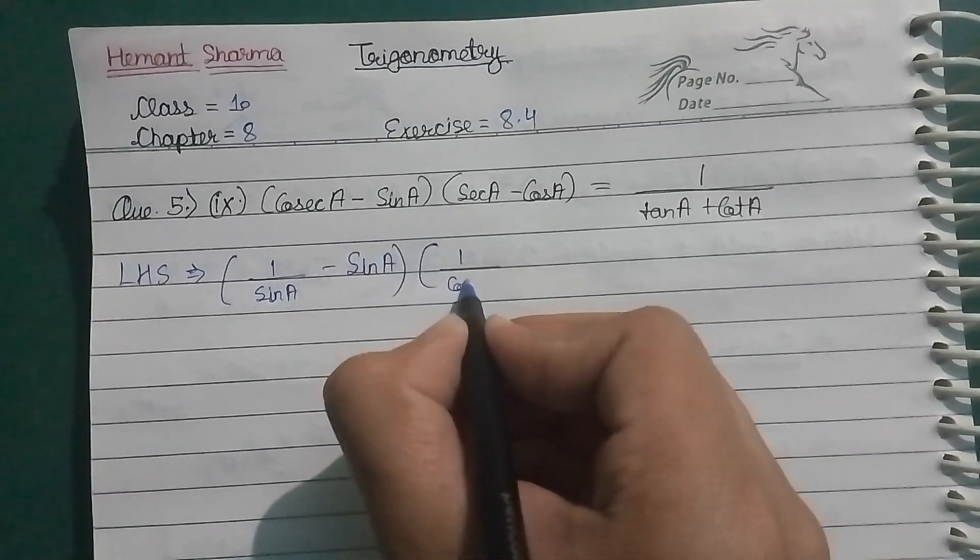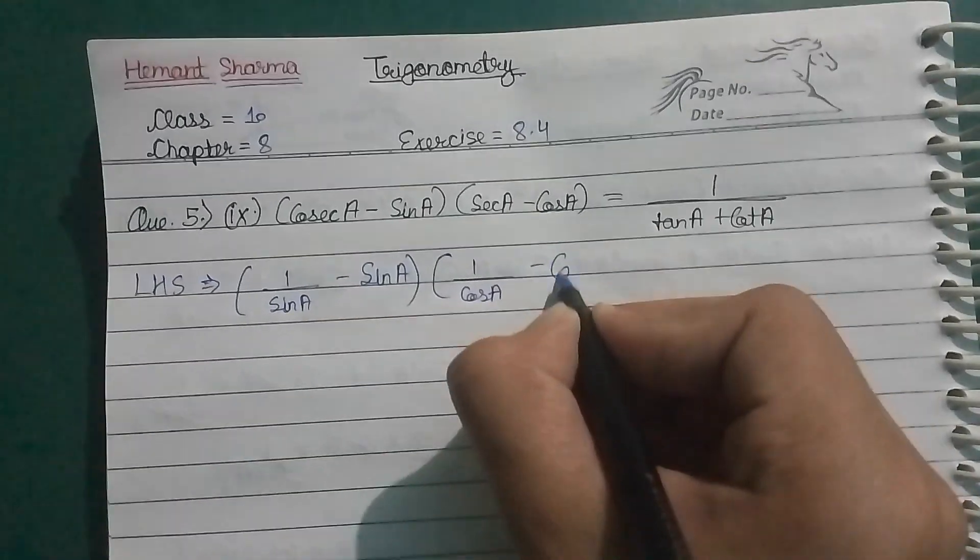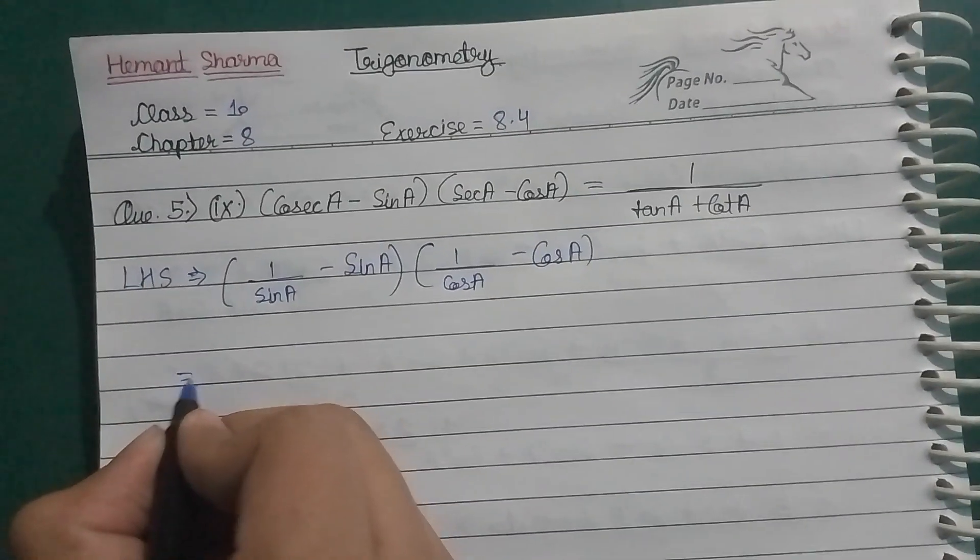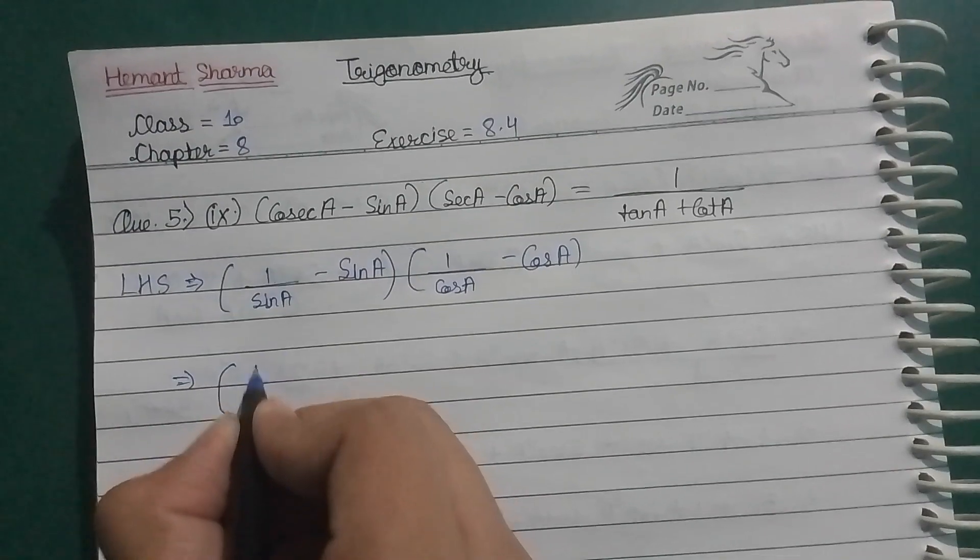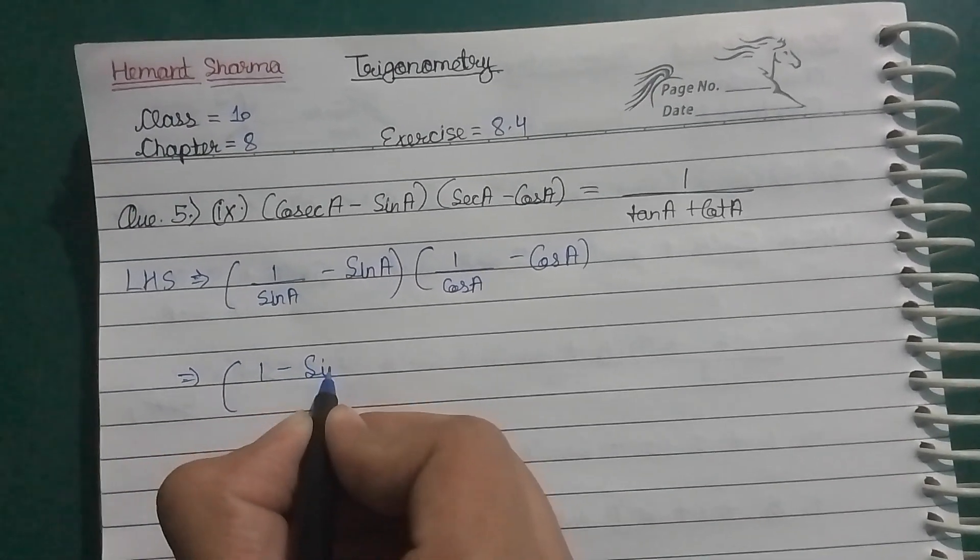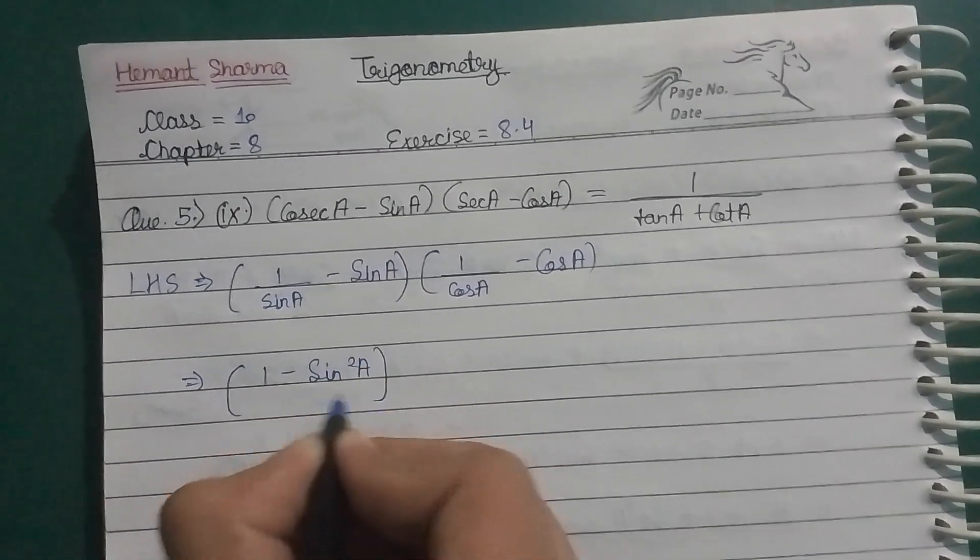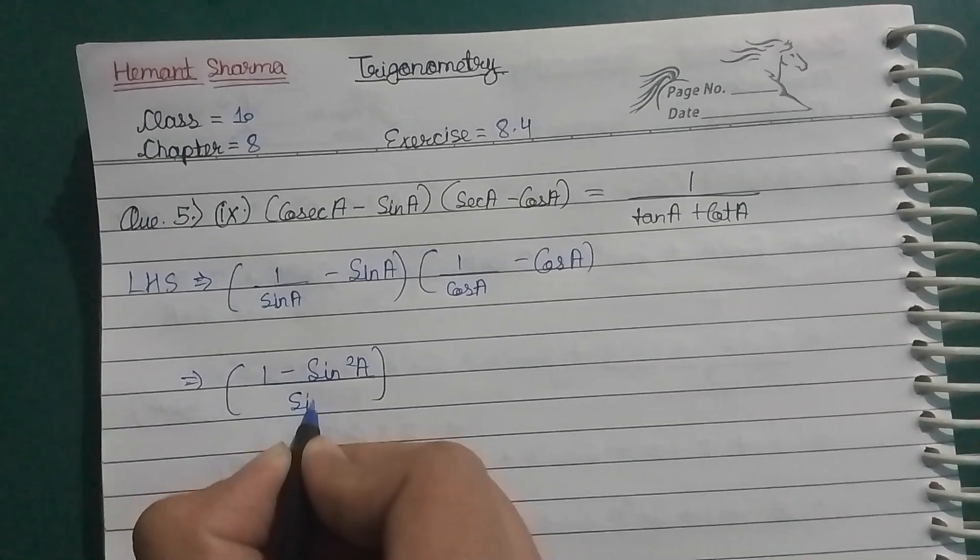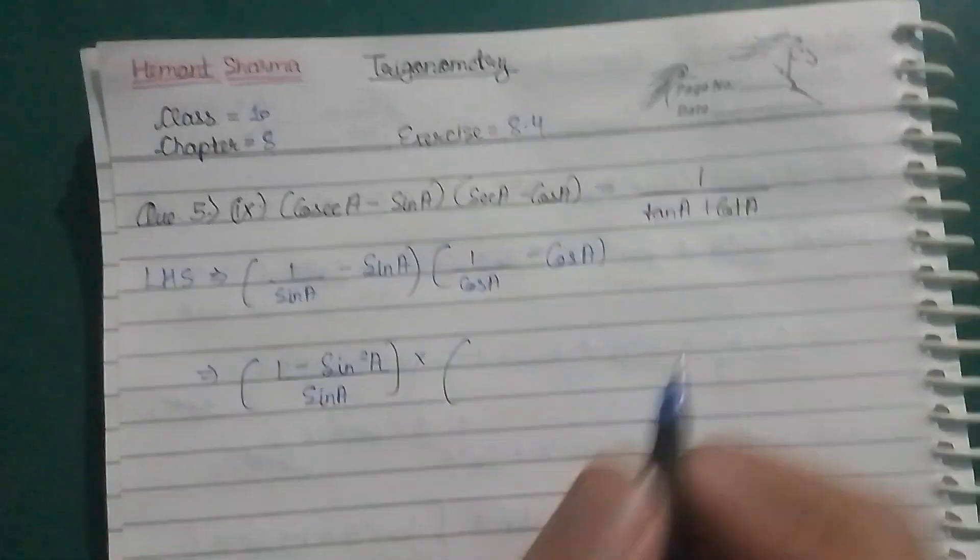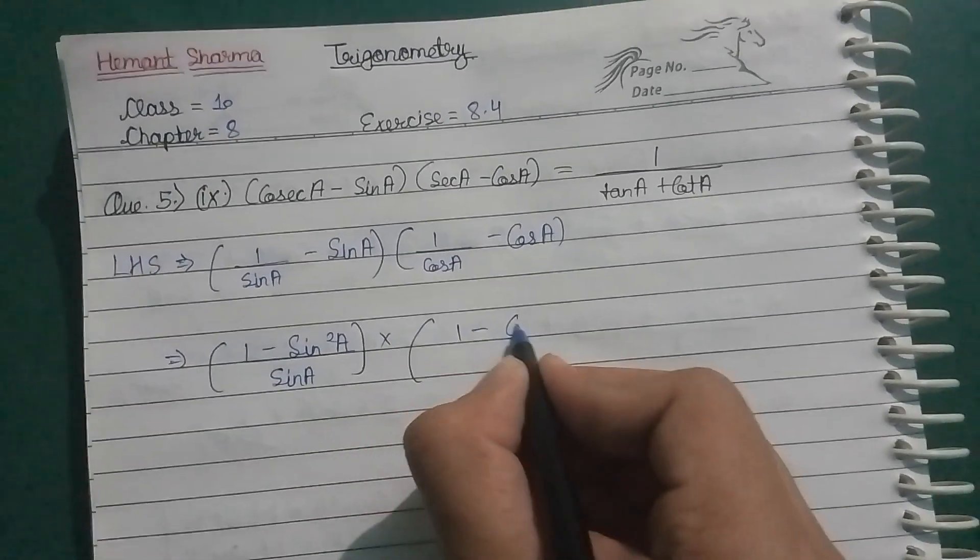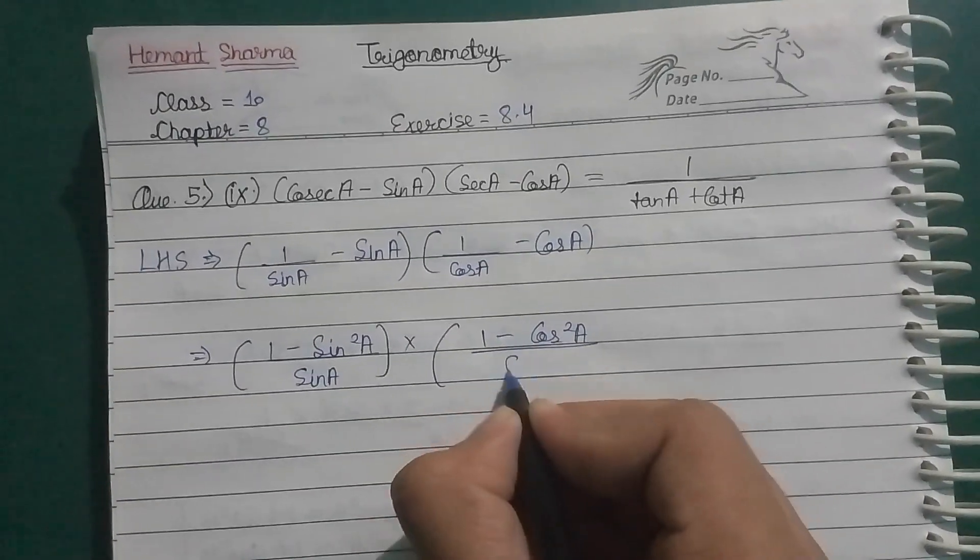Next step: sin A, LCM will be there, 1 minus sin square A upon sin A. And here cos A, LCM: 1 minus cos square A upon cos A.